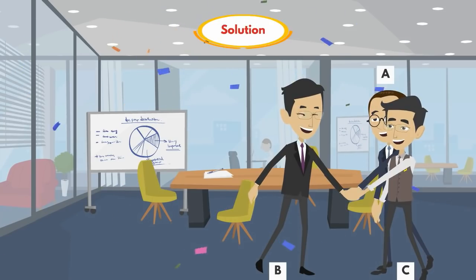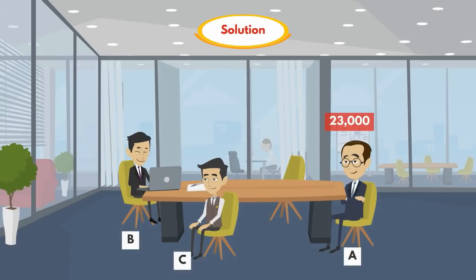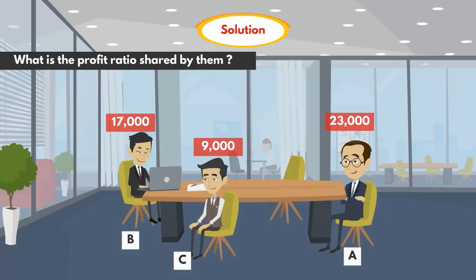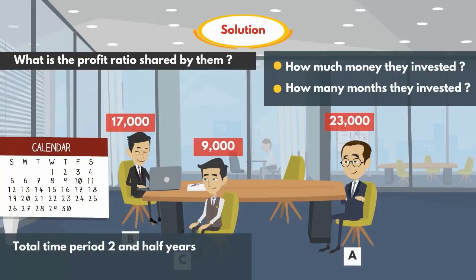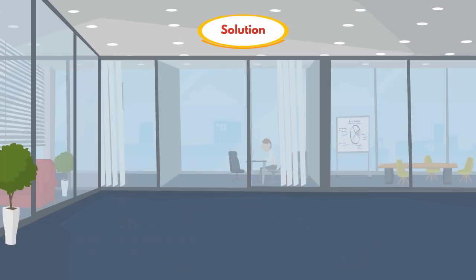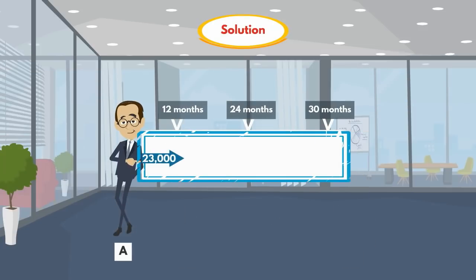Let's see the solution. A, B, C started a business and A invested 23,000, B invested 17,000 and C invested 9,000. They are asking what is the profit ratio shared by them. To calculate the profit ratio, we have to check for all persons how much money they invested and how many months they invested. The total time period is 2 and a half years, which means 30 months. A invested 23,000 at the start and later made no further investment or withdrawal, so A's investment is 23,000 for 30 months.